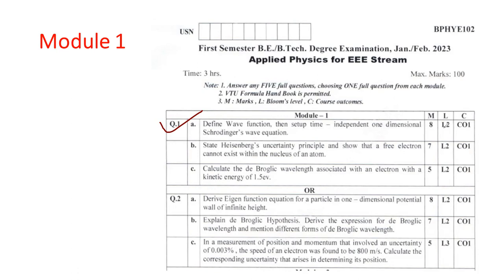You need to define the wave function. It carries the weightage of 8 marks. Next one is called Heisenberg uncertainty principle. It is also having the weightage of 7 marks. Third one is a problem that is calculate the de Broglie wavelength associated with electron with a kinetic energy of 1.5 electron voltage. All together, we will be getting 20 marks from part A, question number 1. Now, I am going to show you how to answer this.